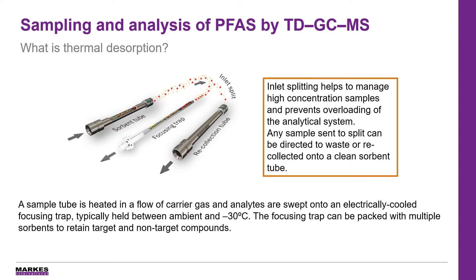For those of you unfamiliar with thermal desorption, let me quickly explain the process. Sample tubes are placed into the thermal desorber and leak checked prior to being heated in a flow of inert carrier gas. This releases the retained compounds and transfers them onto a narrow electrically cooled focusing trap. During this process a portion of the sample can be split and recollected onto a clean adsorbent tube, which can be used to store a precious sample, to validate the methodology, or to ensure efficiency of the method such as the complete desorption of the tube. This really is key to ensure good practice, validate the results and ensure robust methodology.